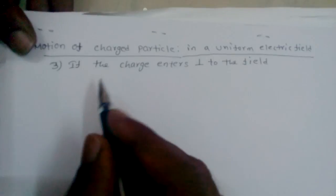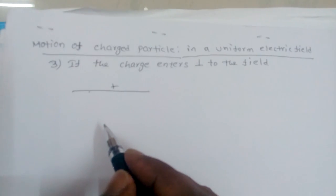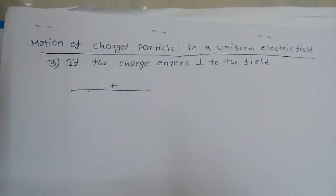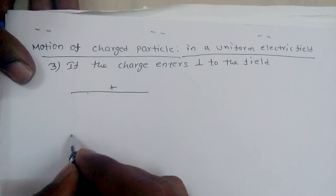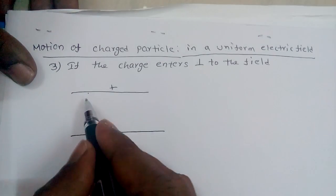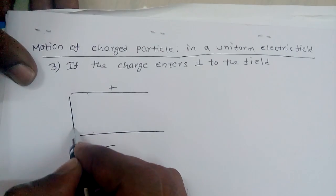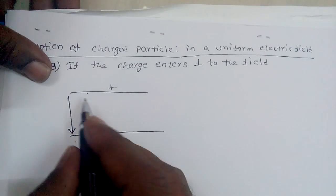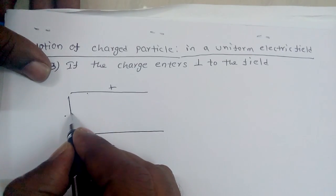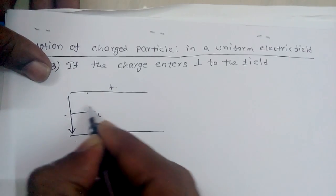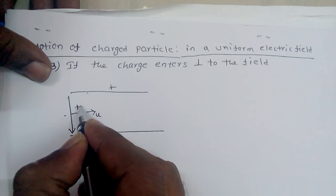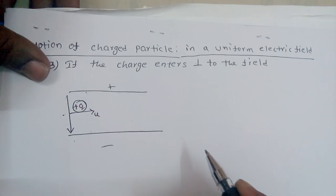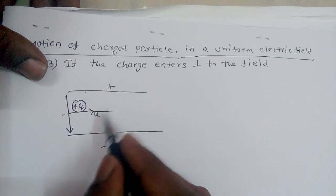Consider this example: here is a positively charged plate and a negatively charged plate. Between these two, the uniform electric field is in the direction from positive plate to negative plate. Into this electric field, one charged particle enters with a velocity u perpendicular to the field.